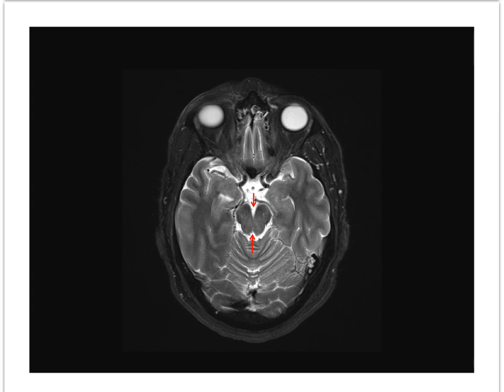Here is the rostral portion of the 4th ventricle tapering to the cerebral aqueduct, which is the narrowest part of the ventricular system. These are the ambient cisterns along the lateral aspect of the midbrain. On either side of the suprasellar cistern lies the uncus, and posterior to the uncus on each side is the hippocampal formation, seen better on parasagittal images through the temporal lobe.